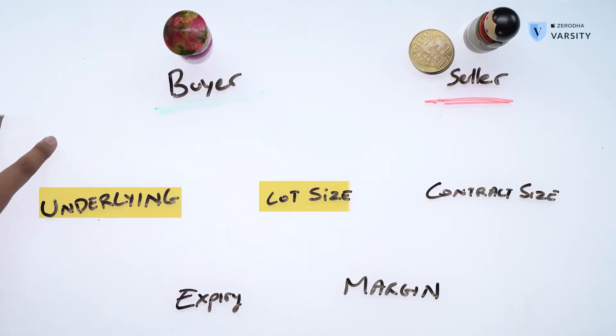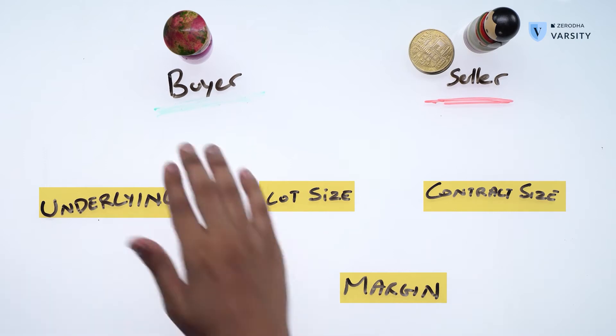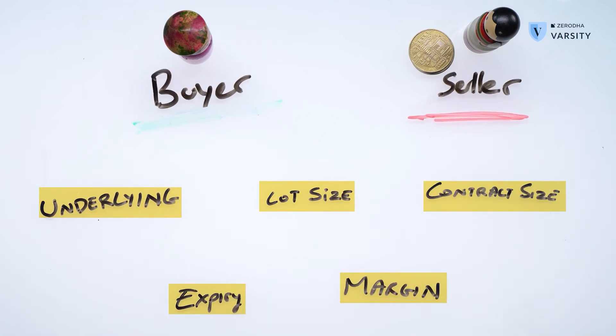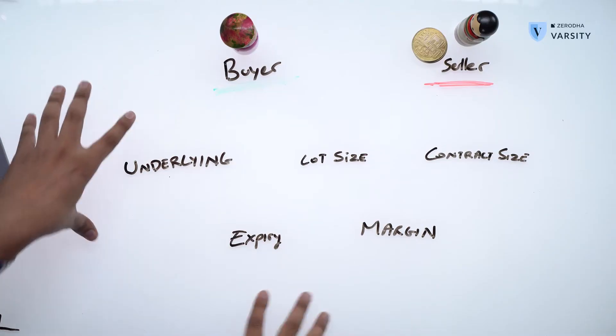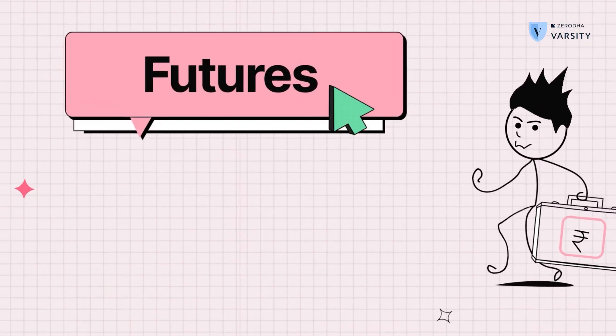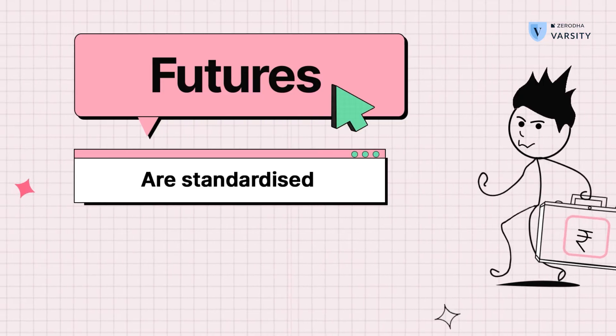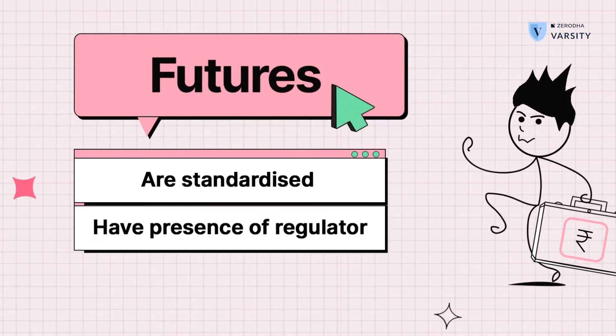These are the parts of a futures contract. We have a buyer and we have a seller. In our previous example, we talked about what commodity they're exchanging — and that was gold. Now a futures contract is quite different from a forwards contract. Futures has all these parts, but two main differences are that a futures contract is standardized, and second, there is a presence of a regulator. The regulator ensures the buyer, the sellers, and any other intermediaries do their job and that obligations are fulfilled.